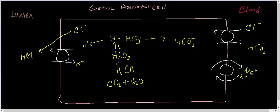Chloride ion tends to follow the secretion of hydrogen ion into the lumen to give you an end product of hydrochloric acid.